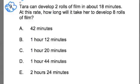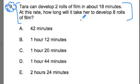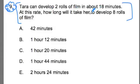Number nine. First thing I'm going to do is read it over. Now this one is building off of the last few that we've done in this series involving model drawing, so I'm going to talk about that in a moment. But first I'll read it over: Tara can develop two rolls of film in about 18 minutes. At this rate, how long will it take her to develop eight rolls of film?